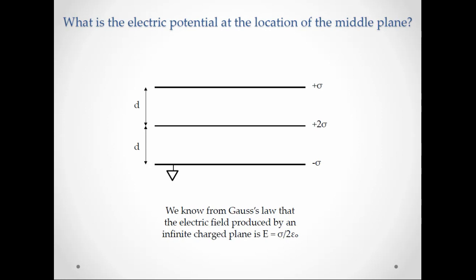So we know from Gauss's law that the electric field produced by an infinite charge plane is just E equals sigma divided by two epsilon naught. So we can use superposition to determine the electric field in all regions of space, and then we can convert that electric field to electric potential. So let's get started.